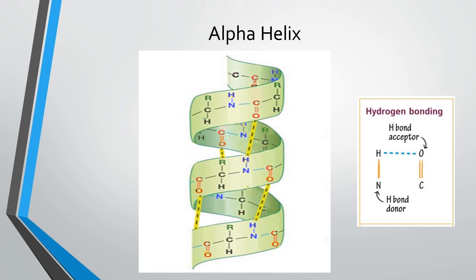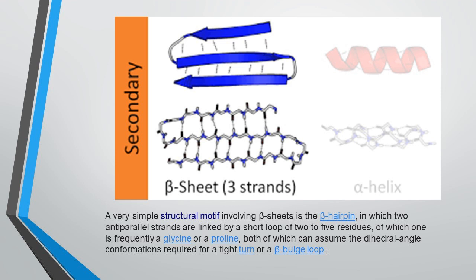The polypeptide chain begins to assume local 3D conformations of amino acids that are in close proximity with each other in their linear sequence. Secondary structure includes alpha helix and beta sheets, and specifically involves interactions between residues that are near each other along the polypeptide sequence. The amino and carboxyl groups of amino acid residues form the backbone of the polypeptide chain, which forms hydrogen bonds to create secondary structure.